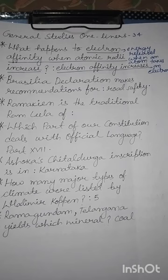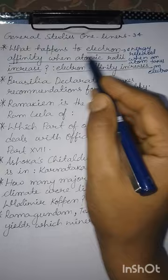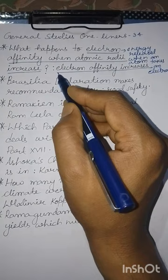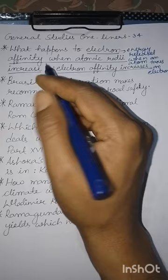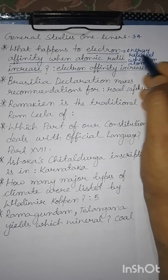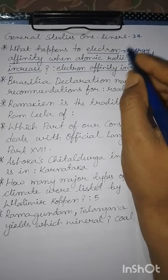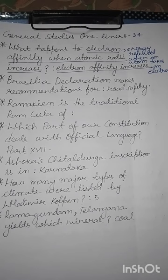The first question: what happens to electron affinity when atomic radii increase? The answer is electron affinity increases. Electron affinity is the energy released when an atom takes an electron. यह वह ऊर्जा है जो किसी परमाणु द्वारा एक electron ग्रहण करने पर मुक्त होती है।